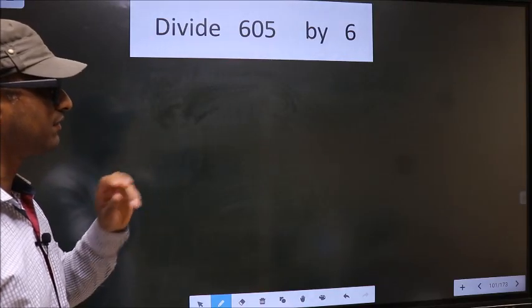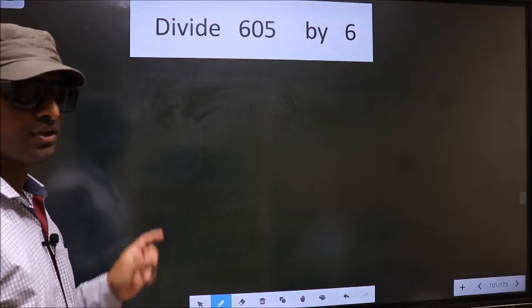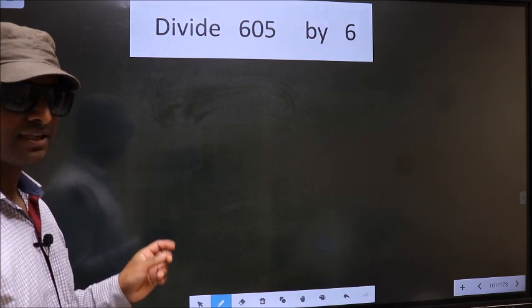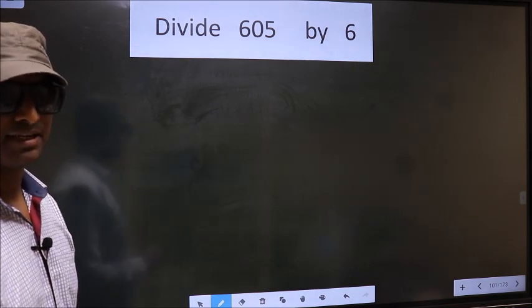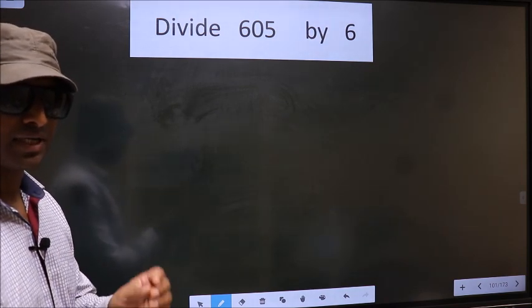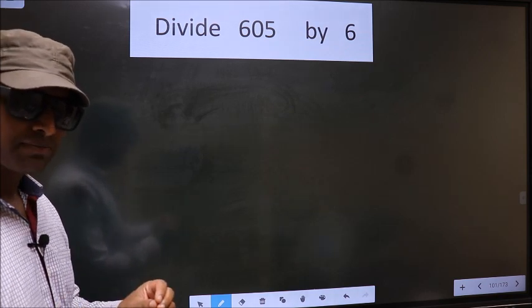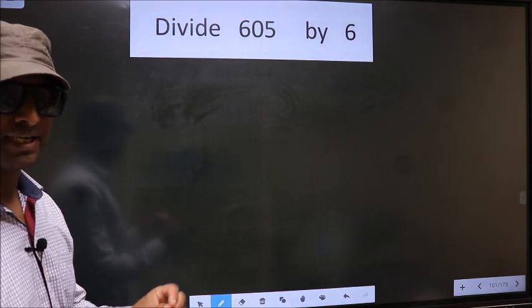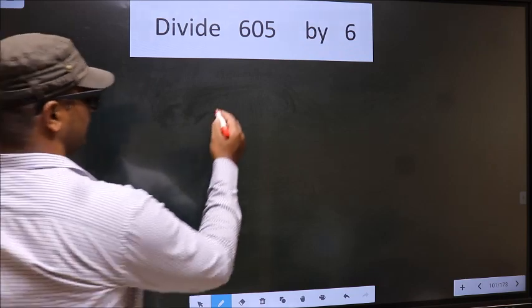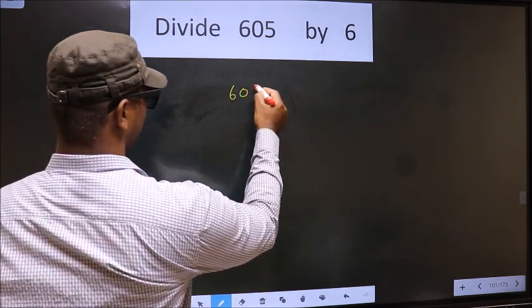Divide 605 by 6. While doing this division, many make a mistake. What is the mistake that they do? I will let you know, but before that we should frame it in this way: 605